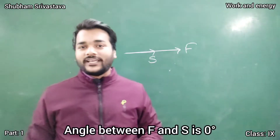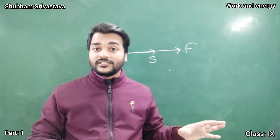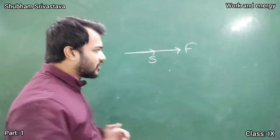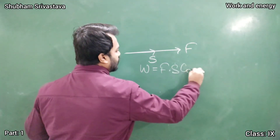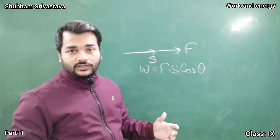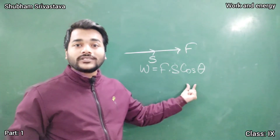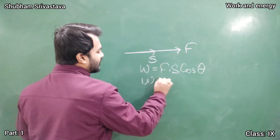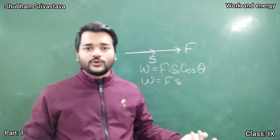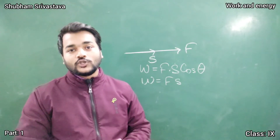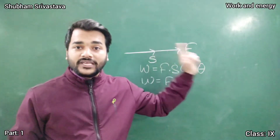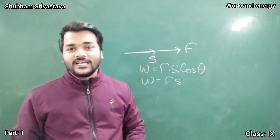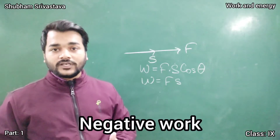In positive work, the angle between force and displacement is zero degrees. The actual formula for work done is W = F × s × cos θ, where θ is the angle between force and displacement. In case of positive work, cos 0° = 1, so the formula becomes W = F × s. The direction of force and displacement remains the same, the angle is zero degrees, and the formula is W = F × s.